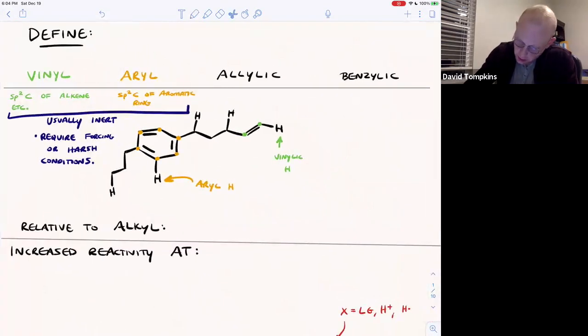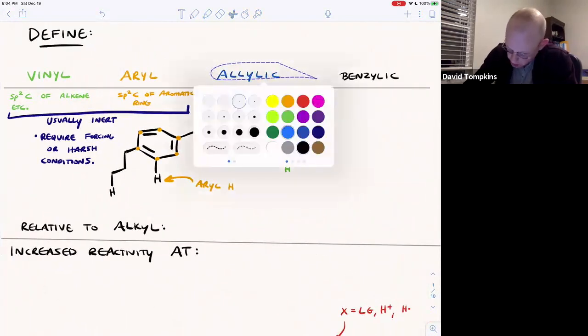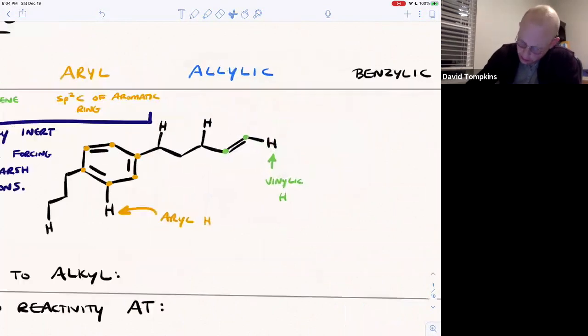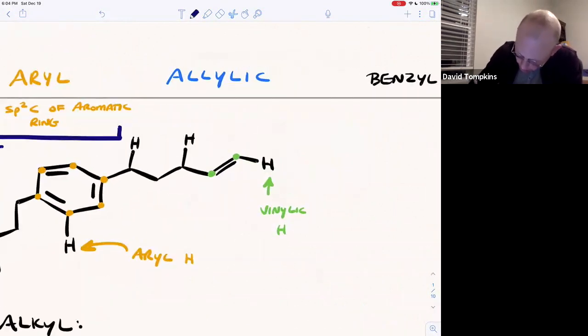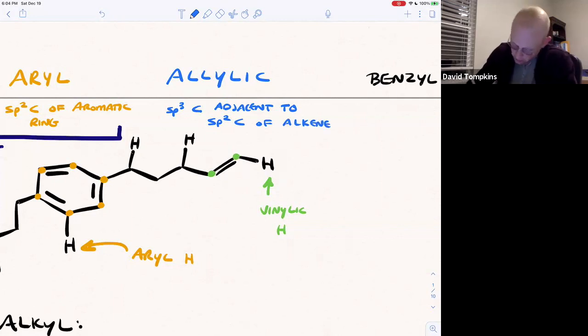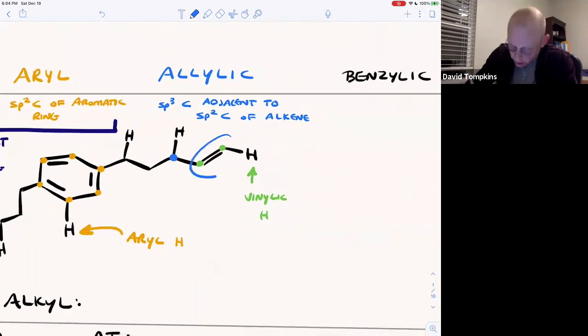So allylic is another unique position where allylic refers to an sp3 carbon that's adjacent to an sp2 carbon of an alkene or it could be some other pi system. So the allylic position here is one away from the carbon-carbon double bond, which means that this is an allylic hydrogen.